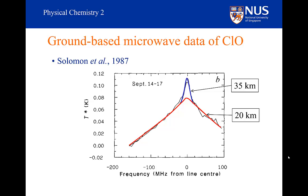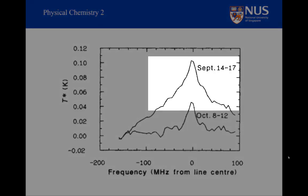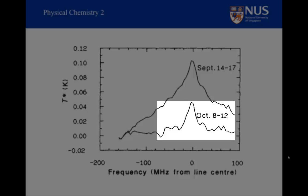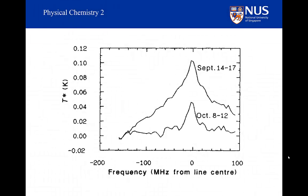They measured far more ClO at 20 km, which explained the dramatic ozone loss because 20 km is the altitude where the largest concentrations of ozone are normally found. Comparing data from September 14–17 — showing the narrow peak atop a broad peak — with data from October 8–12, which showed only the narrow 35 km peak with nothing at 20 km, confirmed that ozone loss had stopped and ClO at 20 km was gone. This was the smoking gun proving that chlorine was responsible for ozone loss.